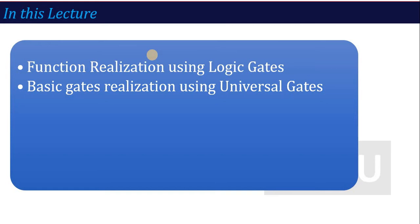In this lecture we are going to see how to analyze a function using logic gates — when a function is given, which logic gates to utilize to make the circuit. The second topic is universal gates. We said NAND is a universal gate because we can realize other gates using it. In this lecture we will see AND, OR, NOT, XOR, and XNOR gates realized using universal gates.